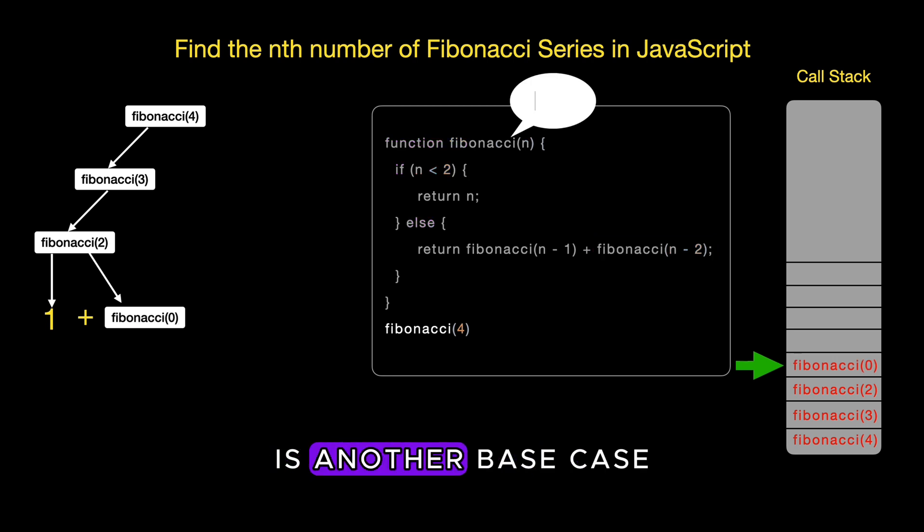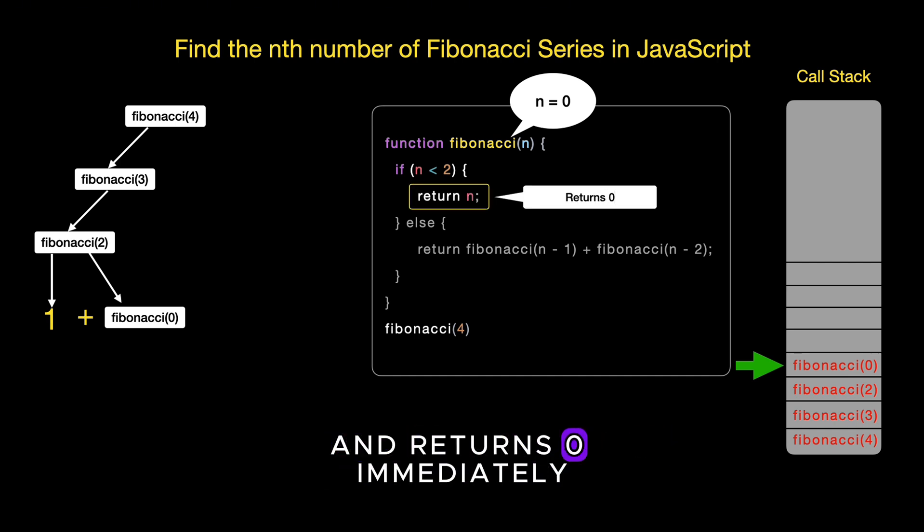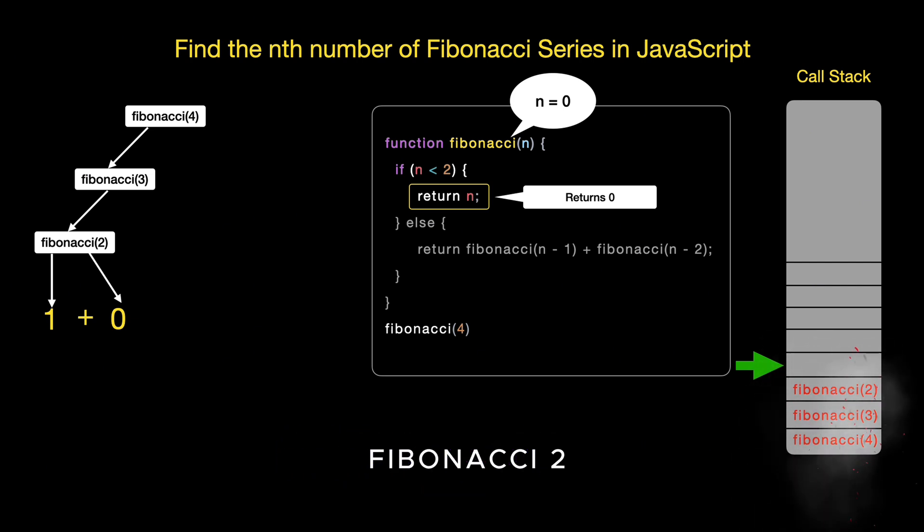Fibonacci 0 is another base case in our Fibonacci function. When we call Fibonacci 0, the function recognizes that 0 is less than 2 and returns 0 immediately as specified by our base condition. With Fibonacci 0 quickly evaluated, we now have both values we need to compute Fibonacci 2.